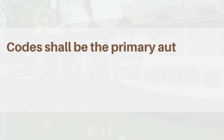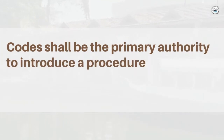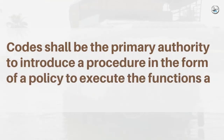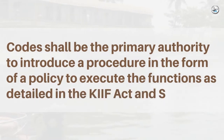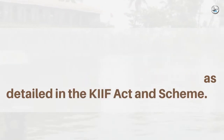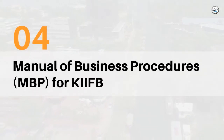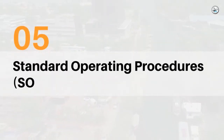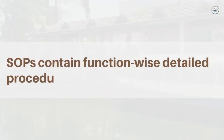KIF-B Code is the primary authority to introduce a procedure in the form of a policy to execute the functions as detailed in the KIF Act and Scheme. 4. Manual of Business Procedures for KIF-B details the operational policies. 5. Standard Operating Procedures contain function-wise detailed procedures.